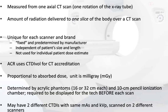The CTDI or CT dose index has several variants — there is weighted and volume. CTDI volume is measured from one axial CT scan, one rotation of the X-ray tube. It is the amount of radiation delivered to one slice of the body over a CT scan. It is unique for each scanner and brand, fixed and predetermined by the manufacturer, independent of patient size and length.